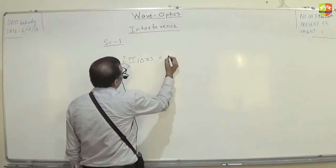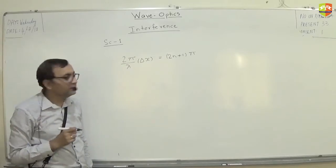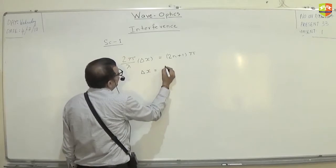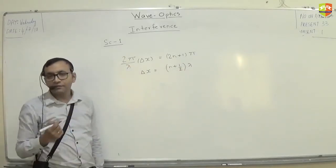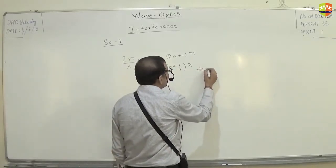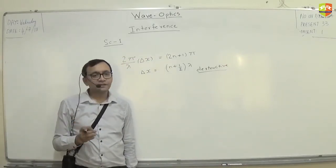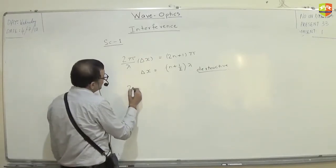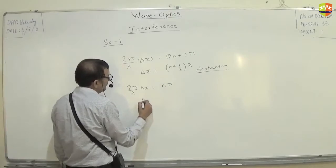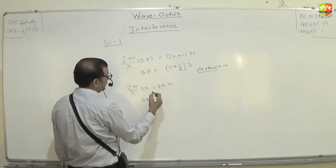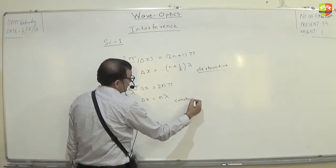We've found that the phase difference is 2π/λ × Δx, where Δx is the path difference. When this equals (2n+1)π, destructive interference happens. So the condition for destructive interference is Δx = (n + ½)λ. When the phase difference equals 2nπ, constructive interference happens, giving condition Δx = nλ. This is constructive.